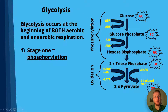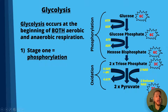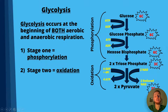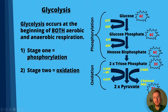Stage one of glycolysis is phosphorylation: phosphate is added to glucose from ATP, and the glucose becomes glucose phosphate when one phosphate is added, then hexose bisphosphate when a second phosphate is added. Stage two is oxidation, where pyruvate is formed from triose phosphate. It's called oxidation because NAD is converted to reduced NAD, and as a result the triose phosphate is oxidized, becoming pyruvate.